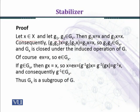Let's start with the closure property. Let x belongs to capital X and we are choosing arbitrary two elements in the set GX. Let g1, g2 belongs to GX. GX is defined as the set of all elements g belonging to G such that gx equals x, so x is fixed under multiplication with g.